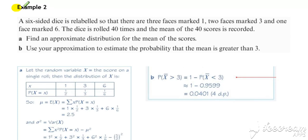In example 2, we've got a discrete random variables situation. A normal dice is relabeled so that 3 faces are marked 1, 2 faces are marked 3, and 1 face is marked 6. And that dice is rolled 40 times and the mean of the 40 scores is recorded.